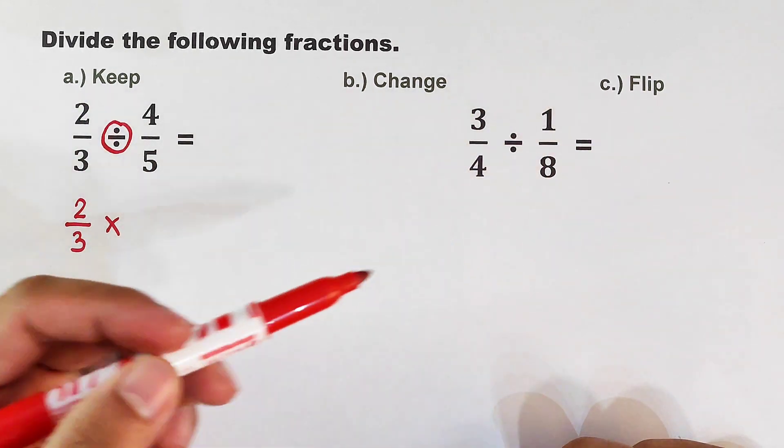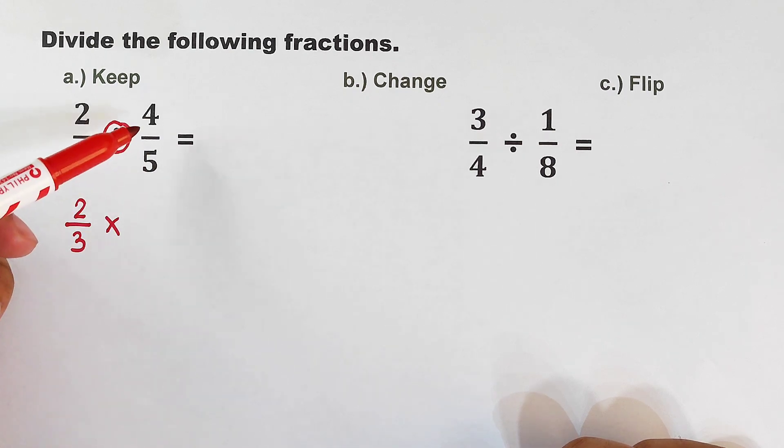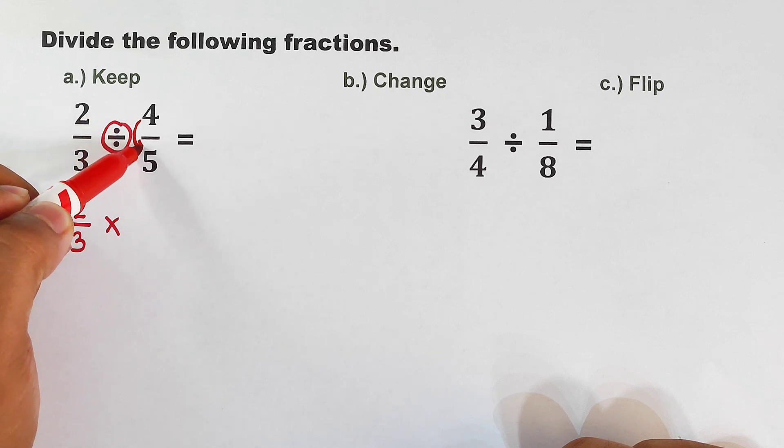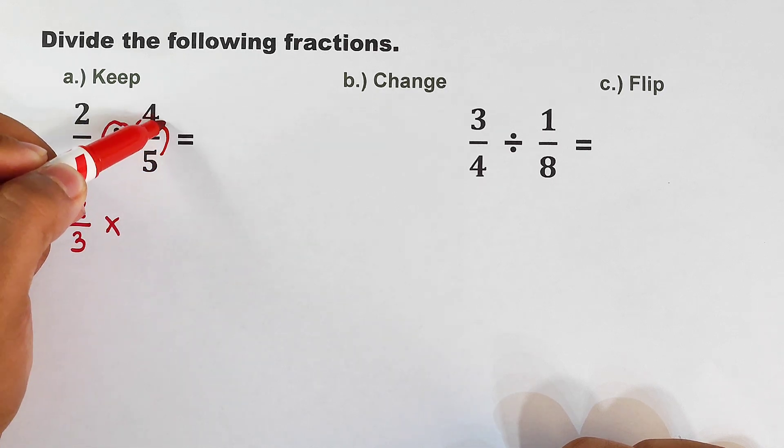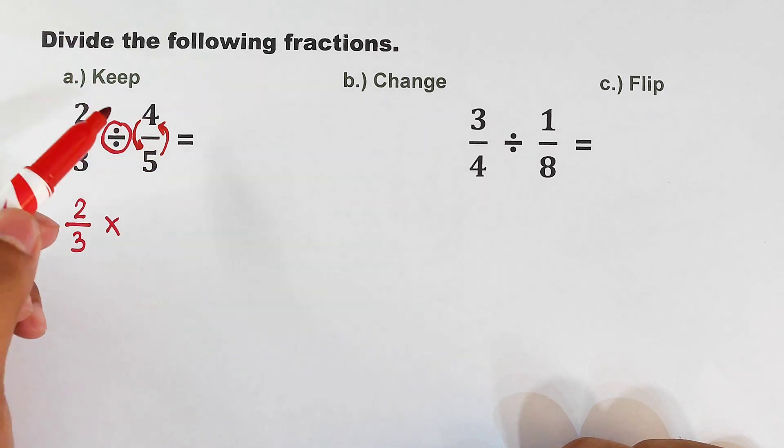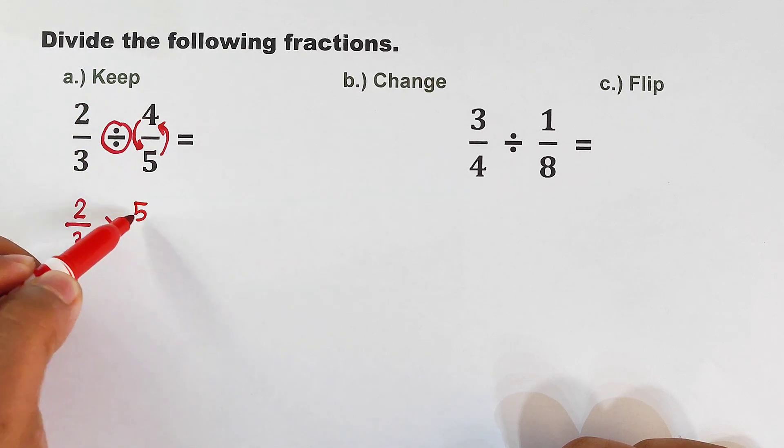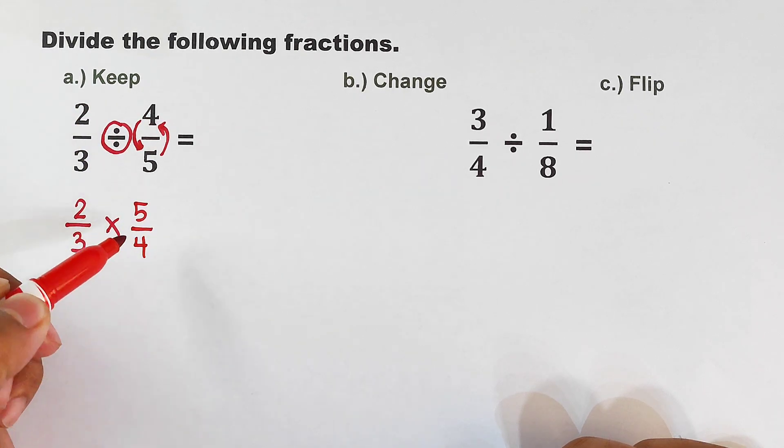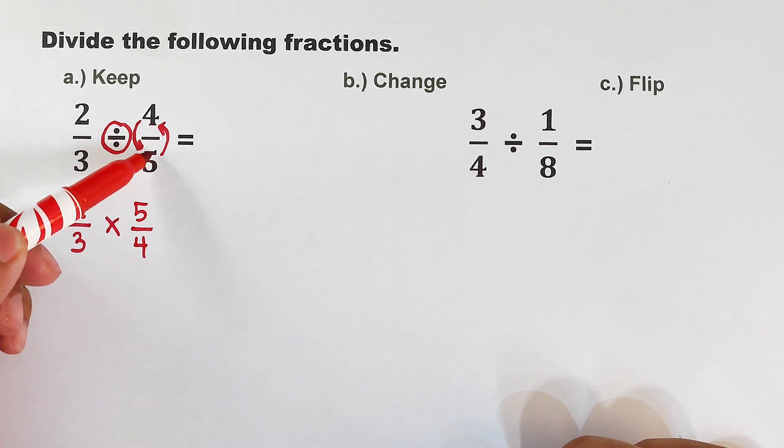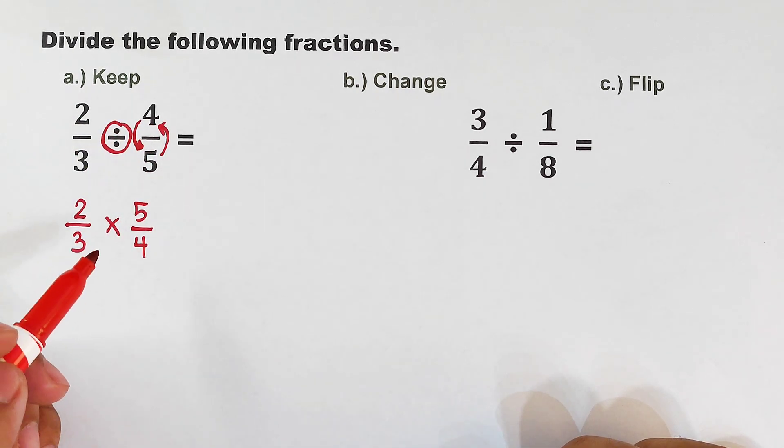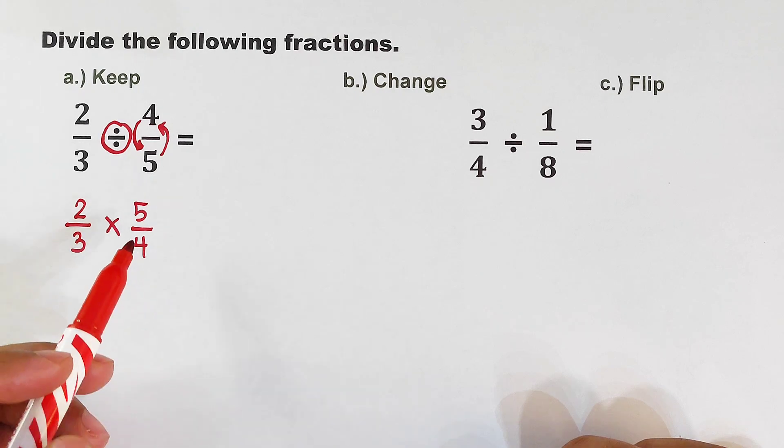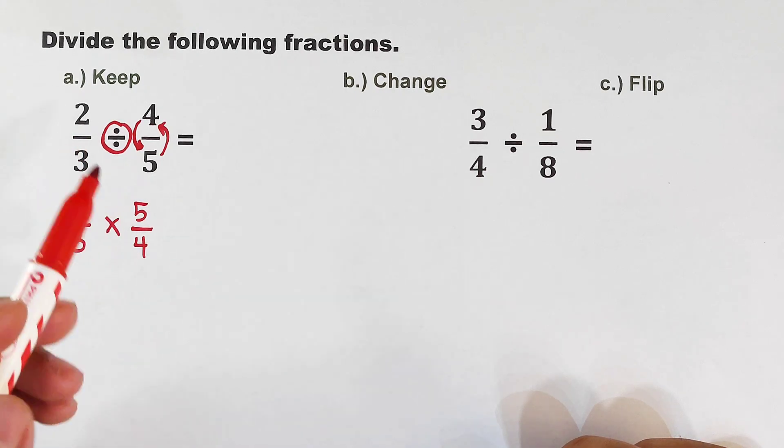Next, after the Keep, Change, we will follow the word Flip. For the Flip word, given this fraction we have four over five, we will flip the position of the numerator and the position of your denominator. If this is four over five, it will become five over four, or simply we're getting the reciprocal of this fraction.